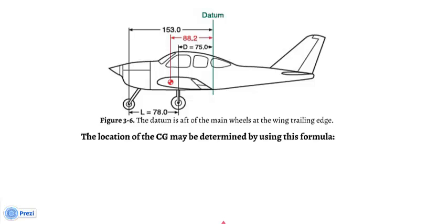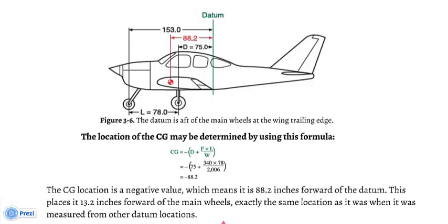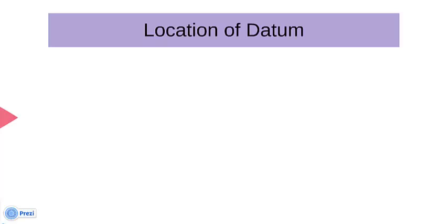The CG may be determined using this formula: CG equals negative open parenthesis D plus F times L, all over W, close parenthesis. Substituting values: negative open parenthesis 75 plus 340 times 78, all over 2006, close parenthesis. The sum is negative 88.2. The CG location is a negative value, meaning it is 88.2 inches forward of the datum, placing it 13.2 inches forward of the main wheels — exactly the same location as before.